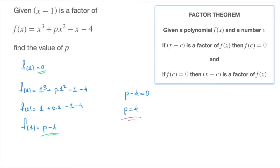And that's the answer — we've just found the value of the coefficient p. If needs be, we can go ahead and rewrite the polynomial as f of x equals x to the power of 3 plus 4x squared minus x minus 4. Let's look at the next example.